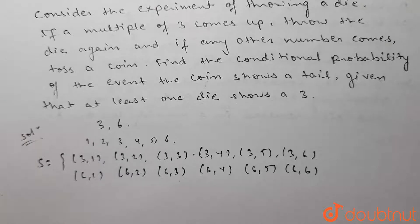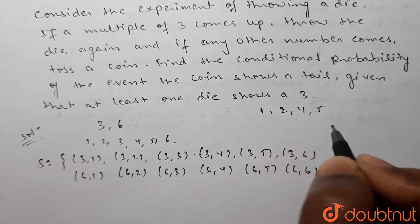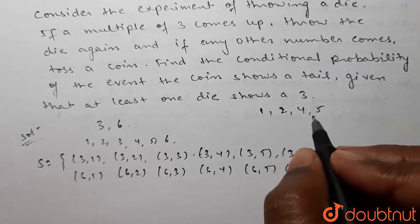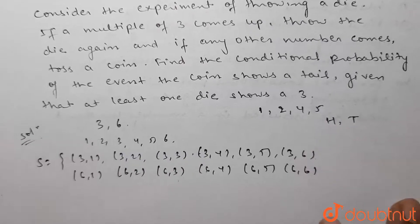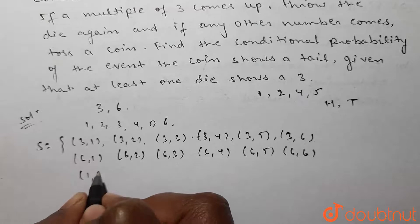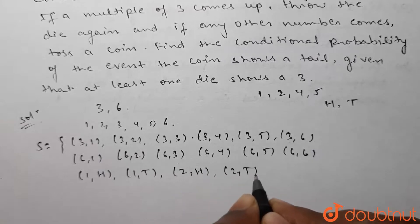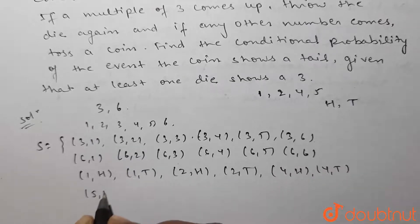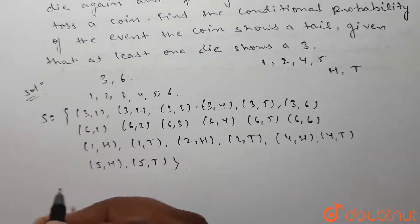These elements are in the sample space. It is also given that if any other number comes — that is, one, two, four, or five — then toss a coin. So if these numbers come on the die, we toss a coin and get outcomes head or tail. The pairs will be: (1,H), (1,T), (2,H), (2,T), (4,H), (4,T), (5,H), and (5,T).